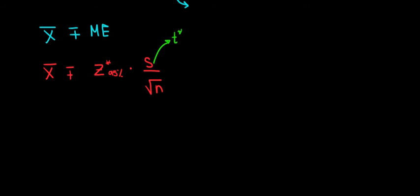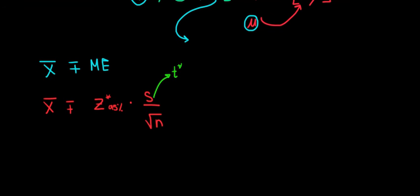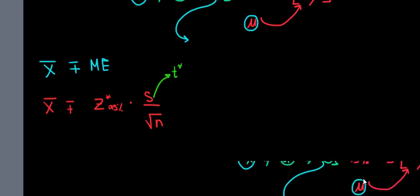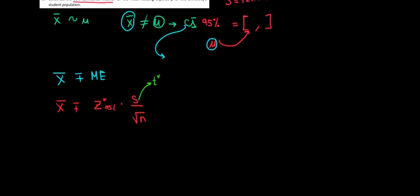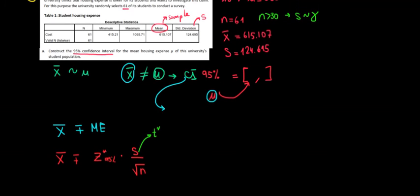So the rest is just pure math. The rest is nothing complicated. It's just working with numbers. So we know that the average of the sample is 615.107 plus minus the critical value at 95% level is 1.96 times the sample standard deviation is 124.695 divided by square root of n square root of 61.